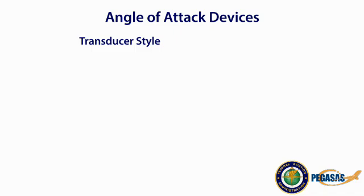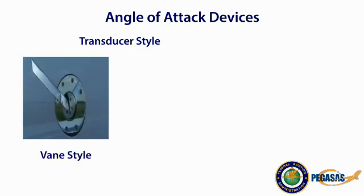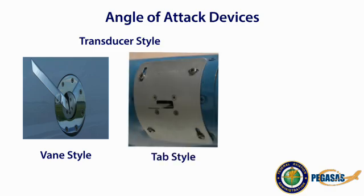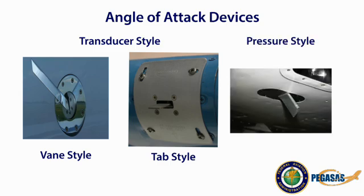There are two main styles of angle of attack devices. The first is a transducer style, which can be further divided into two subcategories: a vane style, which rotates to align with the relative wind, and a tab style, which measures the stagnation point of the airflow impacting the wing. The other AOA device is a pressure style, which measures the vector of the relative wind by comparing the pressure from two different ports. It is important that you are aware, based on the manufacturer of your AOA device, how the angle of attack is being measured.